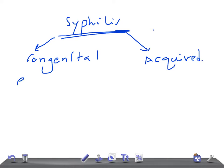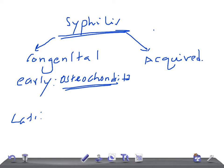In congenital syphilis, it can affect in early and late stages. If it's early, during infancy, it can cause osteochondritis in the juxta-epiphyseal region, resulting in breakdown of bone and cartilage.